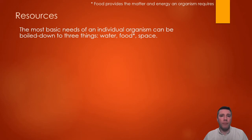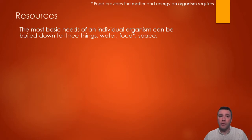The term food is used generically to represent the matter and energy an organism requires. Producers obtain matter in the form of inorganic substances like minerals and ions in the soil and carbon dioxide in the air, which they use to build biological molecules with energy from the sun. For consumers, food represents any of a number of organic molecules they acquire by eating plants or other animals.